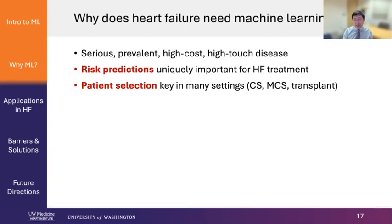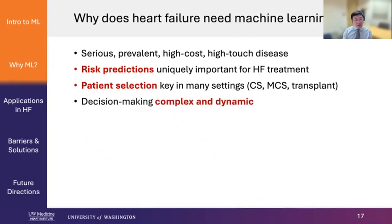This is important because we don't apply the same treatment for everyone. Decision-making in heart failure, especially in cardiogenic shock and advanced heart failure therapies, is often complex and dynamic. This goes to what I was talking about earlier: you can't have very simple rule-based algorithms for those kinds of decisions.